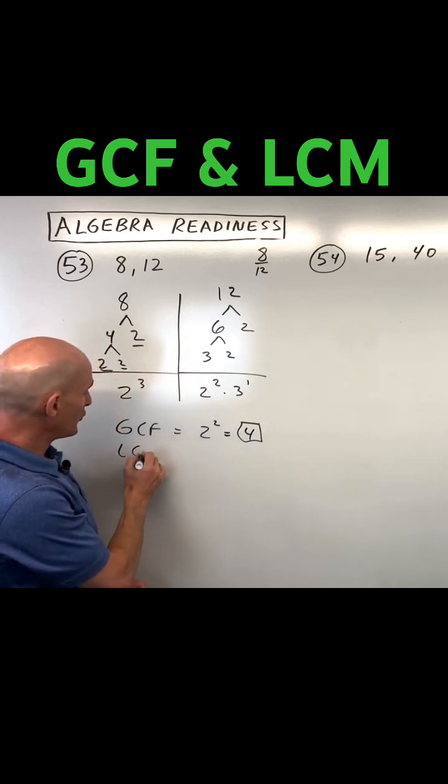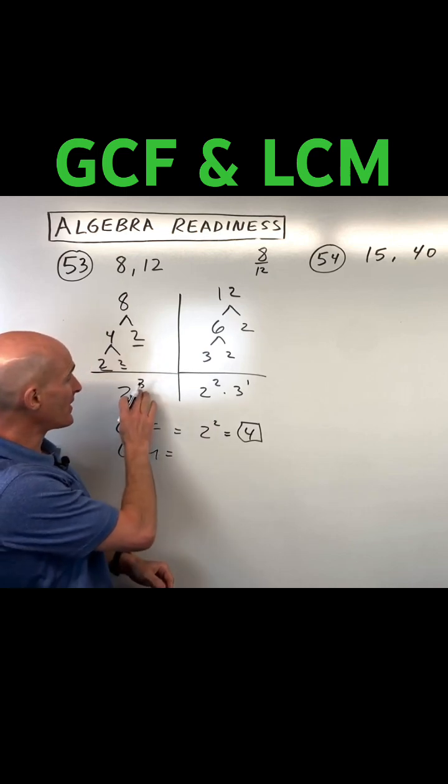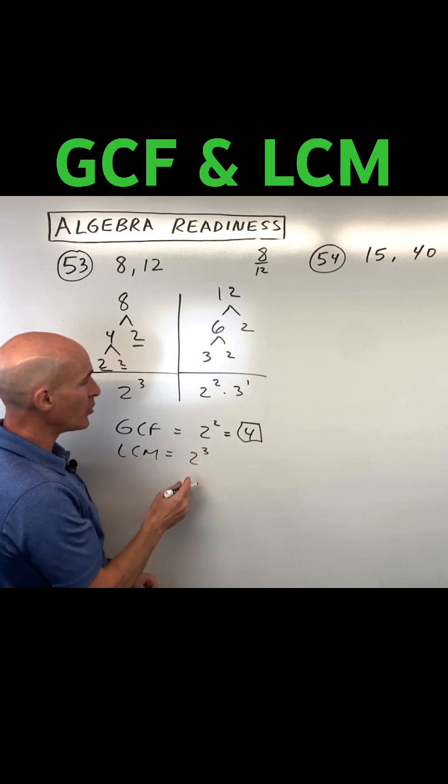Now if I do the least common multiple, I take not what occurs the least but the most. So if I say I have got three twos, two twos, I'm going to take the one that occurs the most.